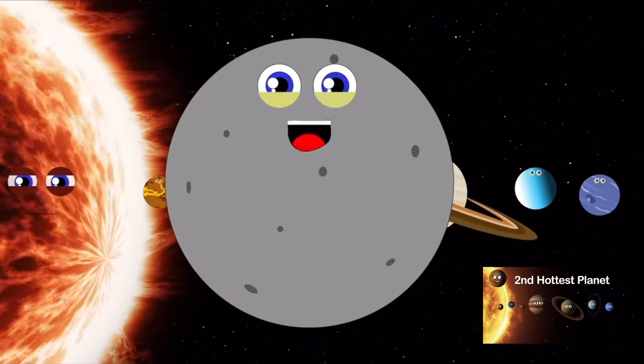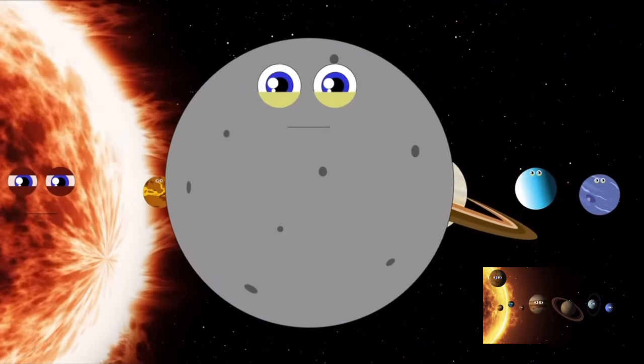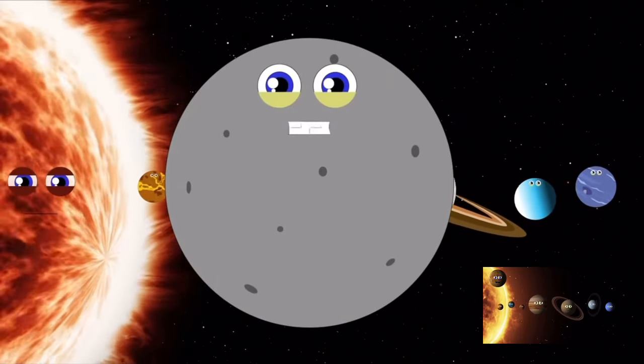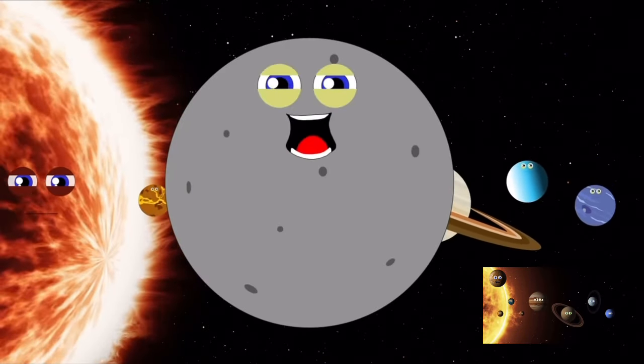My name is Mercury, I'm the second hottest planet, I'm the closest one to the sun. A year on my surface is 88 days, I'm the smallest but lots of fun.